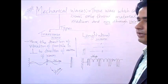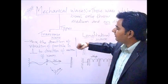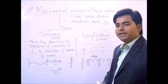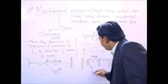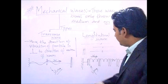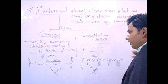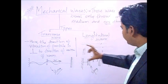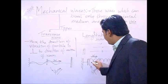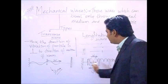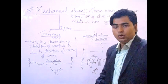The second type is longitudinal waves. In longitudinal waves, the wave moves in the horizontal direction and the particles also vibrate in the same horizontal direction. So here both are parallel — and this is what defines the longitudinal wave.